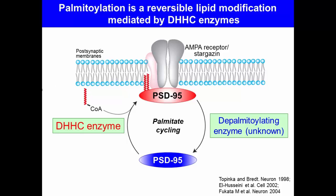The reversible nature of palmitoylation, so-called palmitoylation cycling, provides a potential general mechanism for protein shuttling between intracellular compartments. This palmitoylation cycling is mediated by DHHC palmitoylating enzymes and still-controversial de-palmitoylating enzymes.